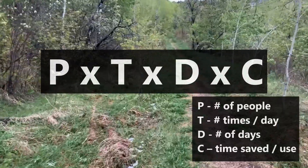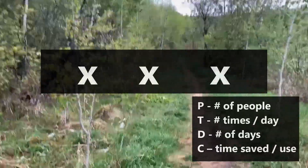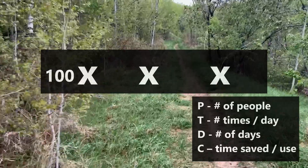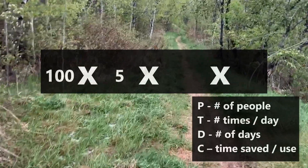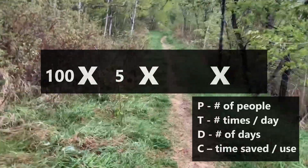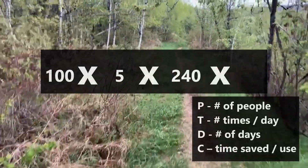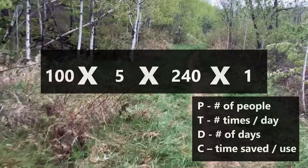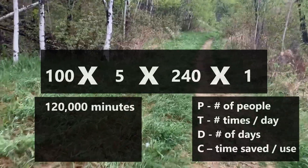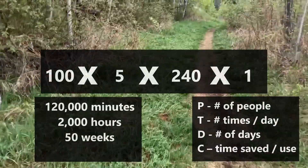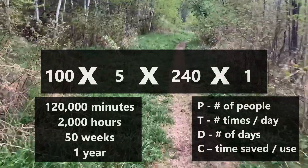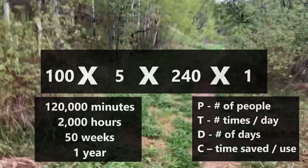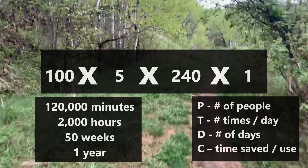Let's run through two quick examples. If you have something used all the time by a lot of people — say an updater — 100 people might use it five times a day over an entire project, say 12 months, 240 days. If it saves each person just one minute per use, that's 120,000 minutes, or 2,000 hours, which is 50 weeks — one year. Over your one year of development, that's a whole person you could save by making a tool.